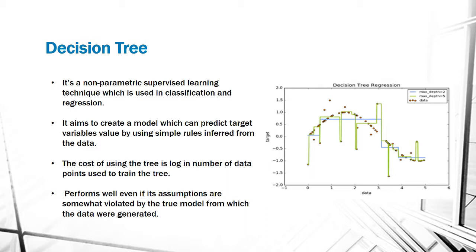Decision tree is a non-parametric supervised learning technique which is used in classification and regression. It aims to create a model which can predict target variables' value by using simple rules inferred from the data. The cost of using the tree is log in number of data points used to train the tree. It performs well even if its assumptions are somewhat violated by the true model from which the data was generated.